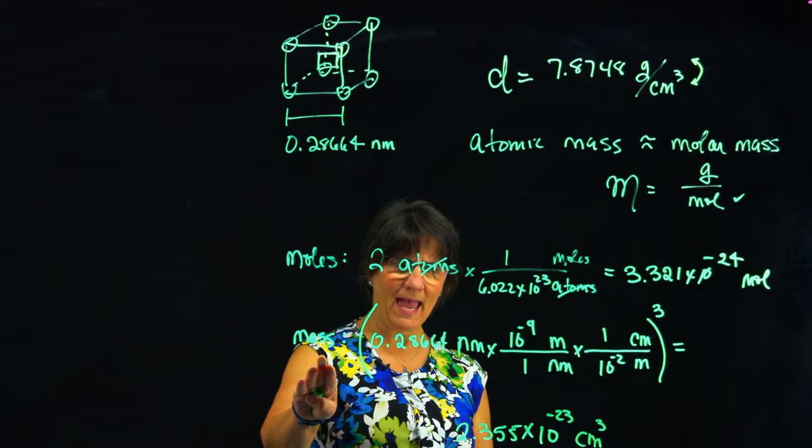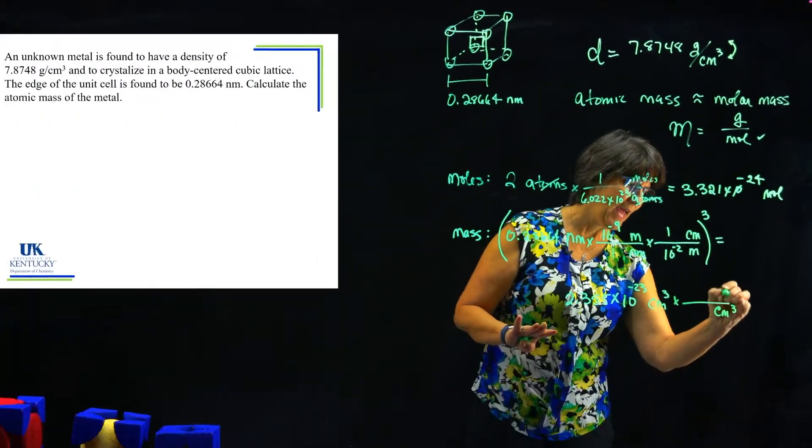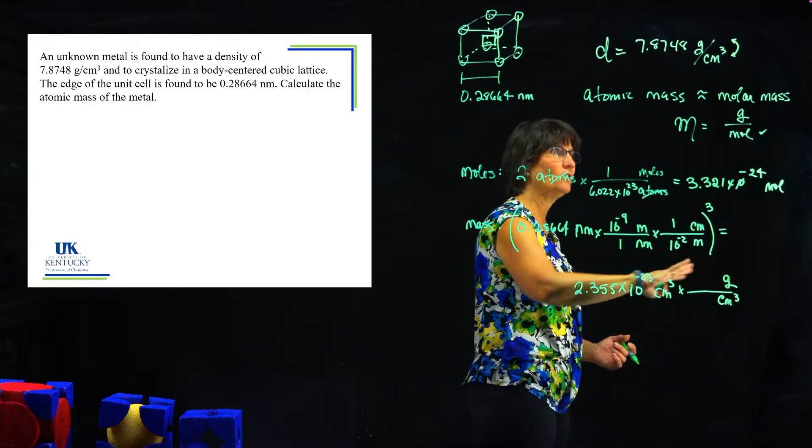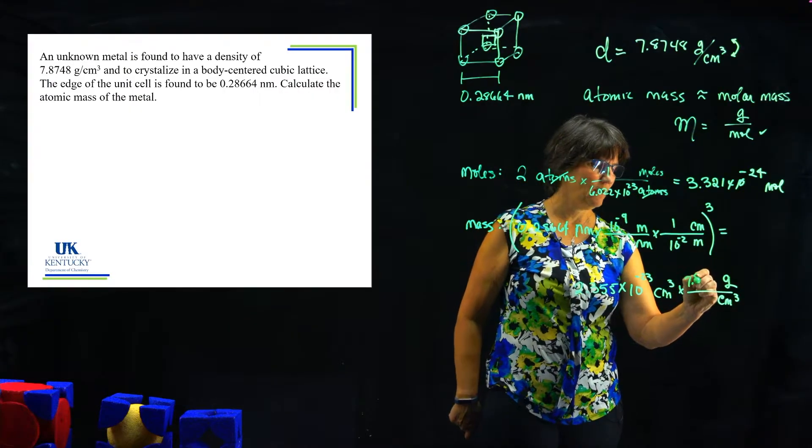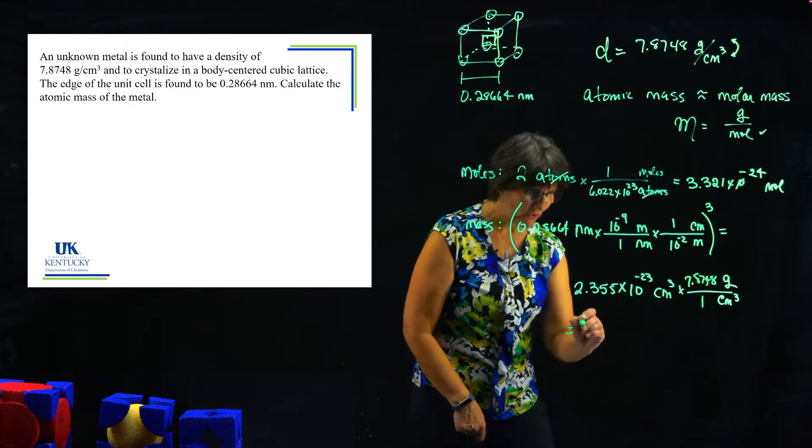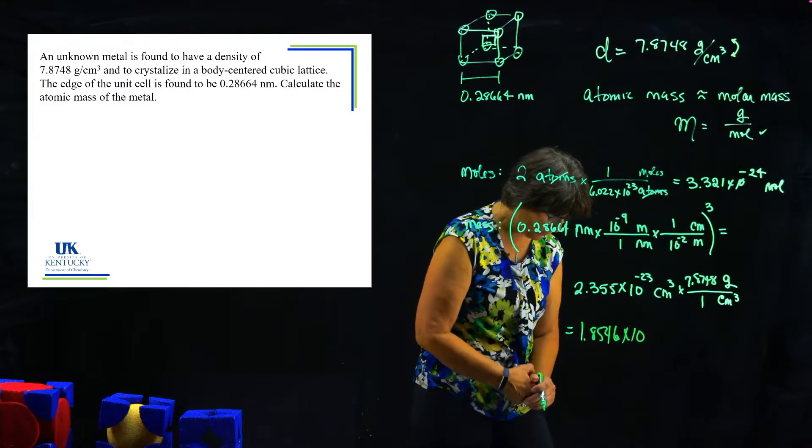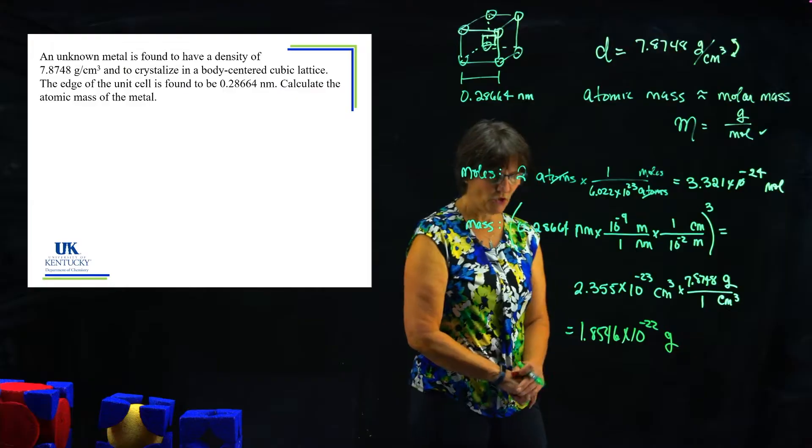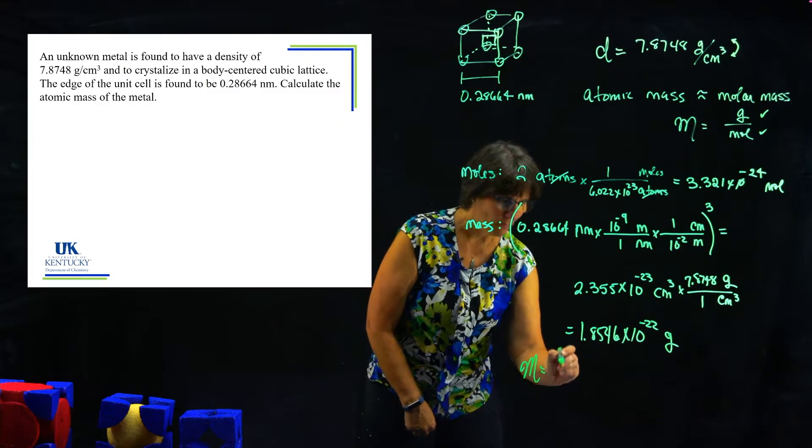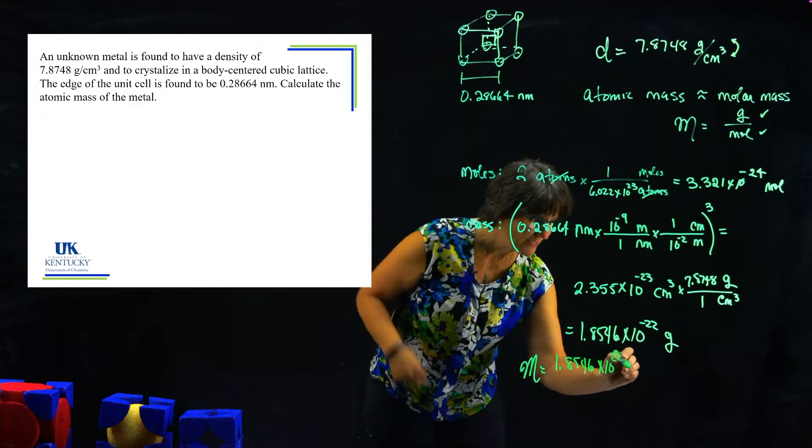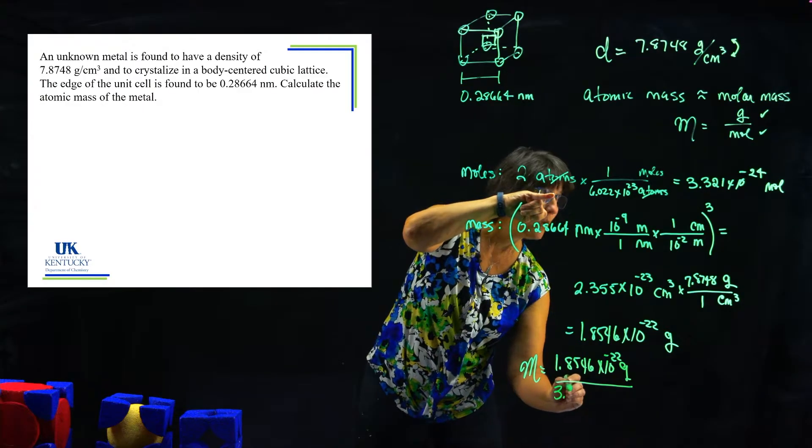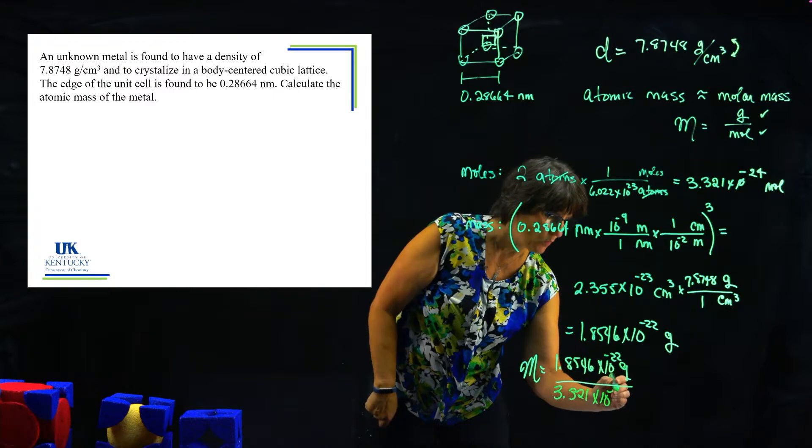But I don't want to stop there. I want to get to mass. So I'm going to cancel my cubic centimeters and I'm going to go to grams. What has units of grams per cubic centimeter? My density. Remember, its job is to convert between cubic centimeters and grams. So I'll put the 7.8748 grams with the cubic centimeter. And that will give me the mass. The mass now is 1.8546 times 10 to the minus 22 grams. Now will it weigh a lot? Certainly not. It's a very tiny mass. So now I know the mass.